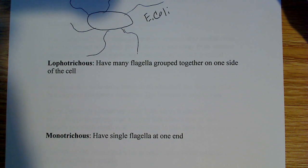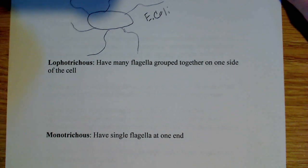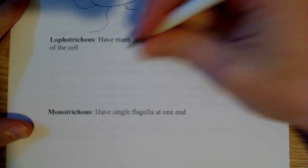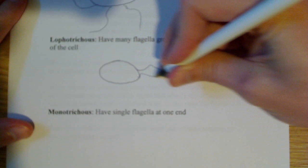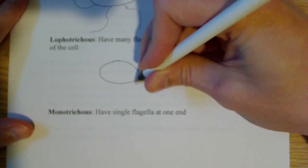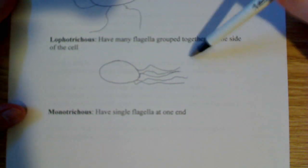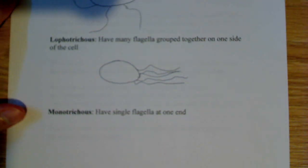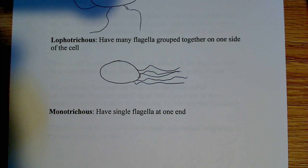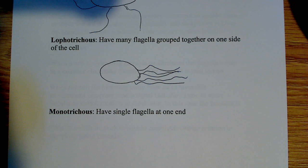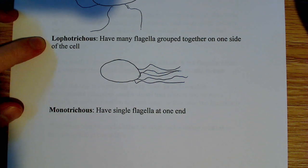Now there's lophotrichous, which have flagella grouped together on one side of the cell. You have a cell, and then you just have these flagella all distributed on this one side of the cell. This all works in the process of motility — certain bacteria are able to move, and what we're talking about here are ones that do contain flagella. That would be lophotrichous, another type of flagella arrangement.